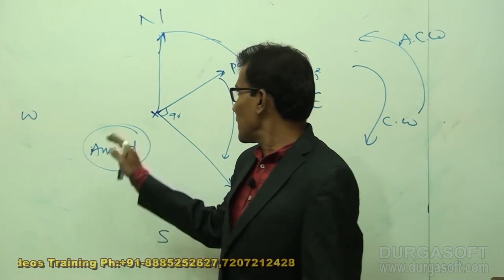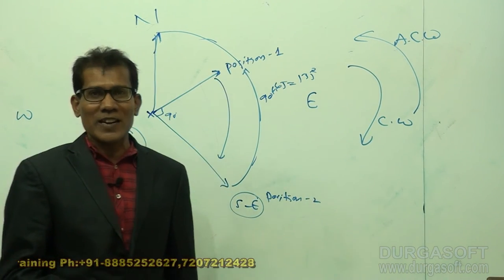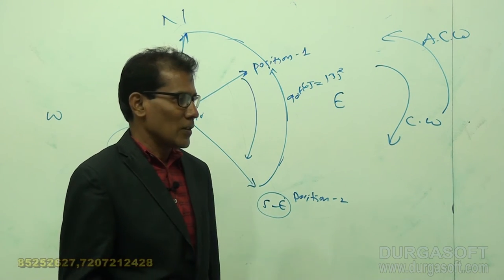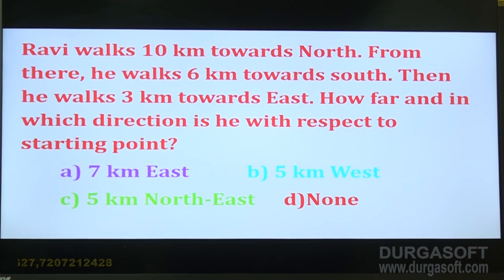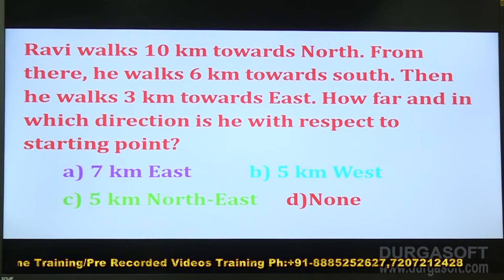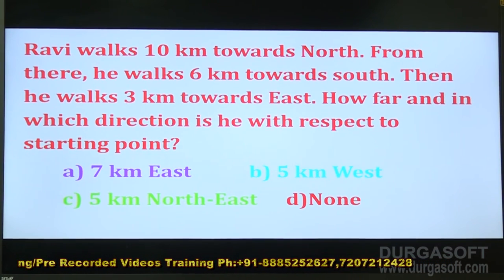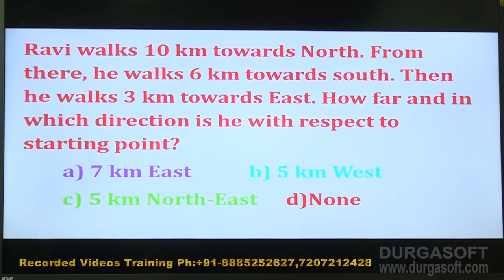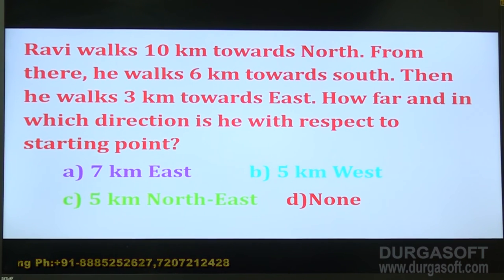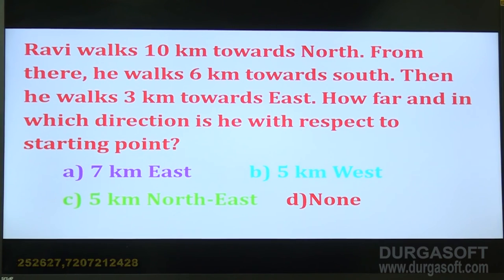This is how we work out the question. We don't require pen and paper here — do it practically in your mind, visualize it, and you'll get the solution in 5 seconds. Now the next question: Ravi walks 10 km towards north, then 6 km towards south, then 3 km towards east. How far and in which direction is he with respect to the starting point? Two things are asked: direction and distance.